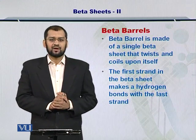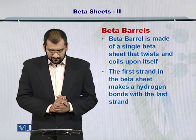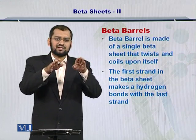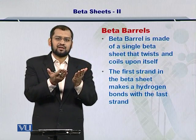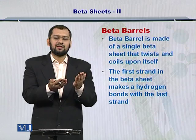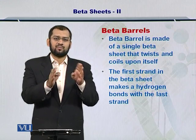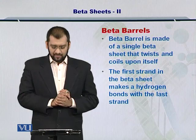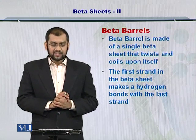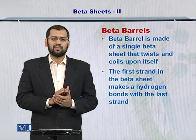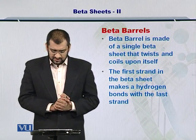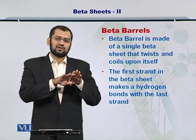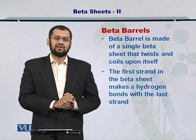Let's start with the beta barrel. Beta barrels are actually barrels of beta sheets and are formed once a beta sheet comes together and the first strand in a beta sheet connects with the last strand in the same beta sheet via a hydrogen bond, and the resulting structure looks like a barrel. The important thing to remember is that the first strand makes a hydrogen bond with the last strand, and therefore it closes on itself and takes the form of a cylinder or a barrel.